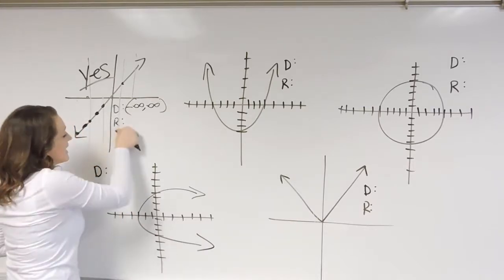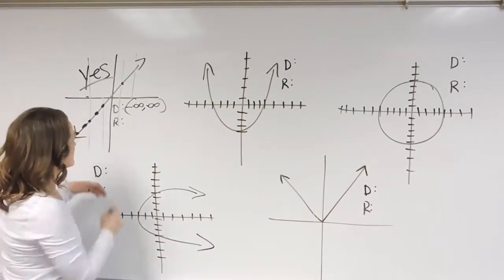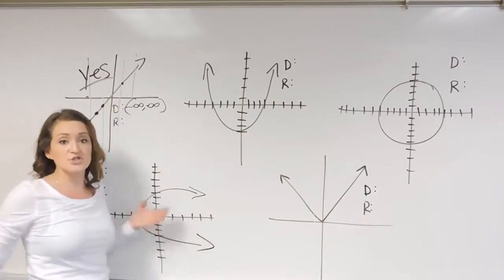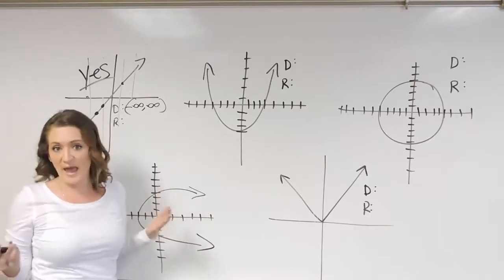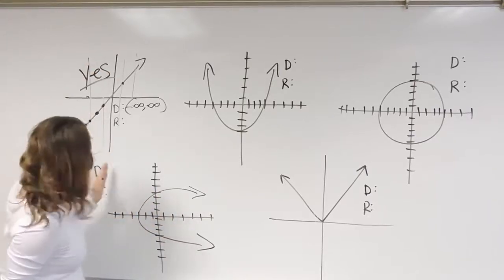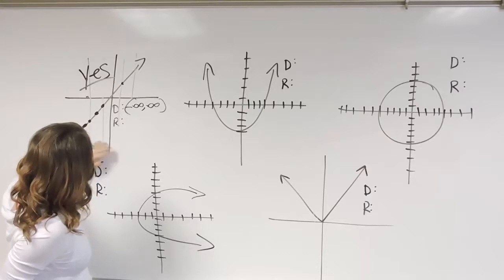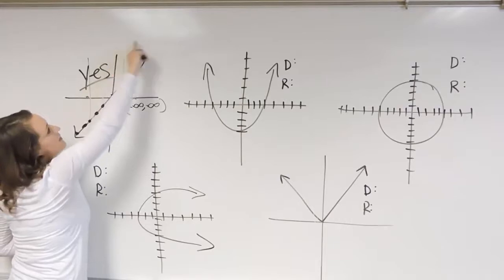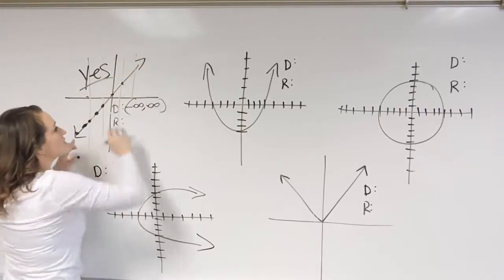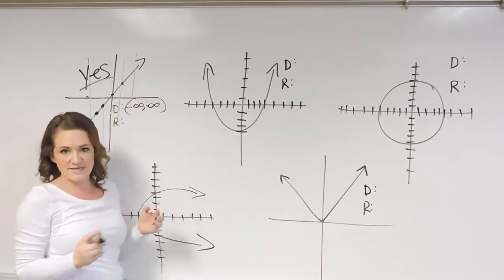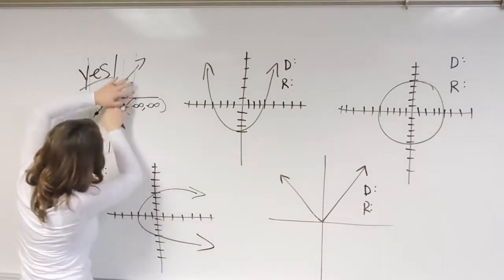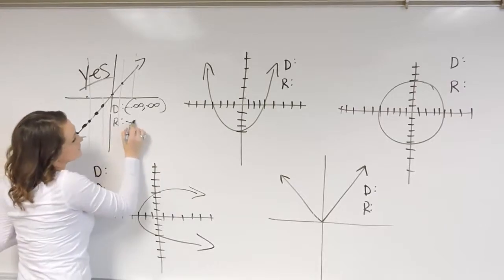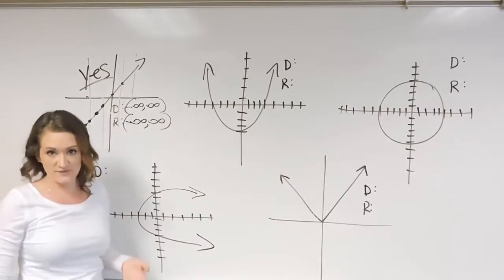Now the range represents the span of our y-values. Looking up and down, where does the graph exist? Down here I have a graph, here I have a graph, right in the middle the graph is here, up here the graph is there. Those two arrows mean the graph stretches on forever, so this graph spans everywhere. The range for this one is negative infinity to infinity.